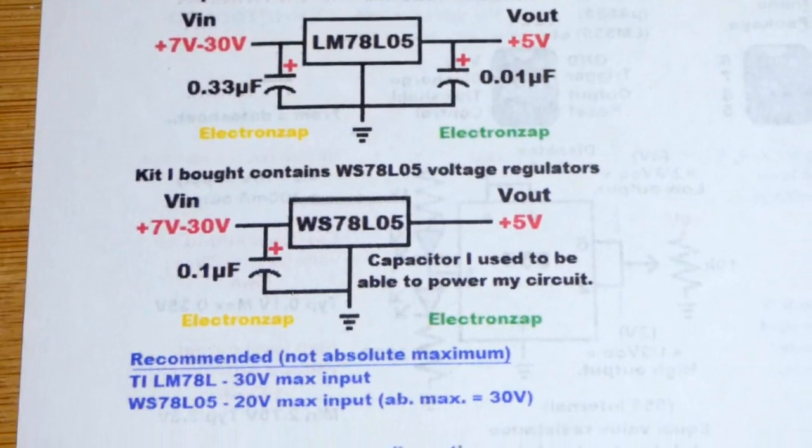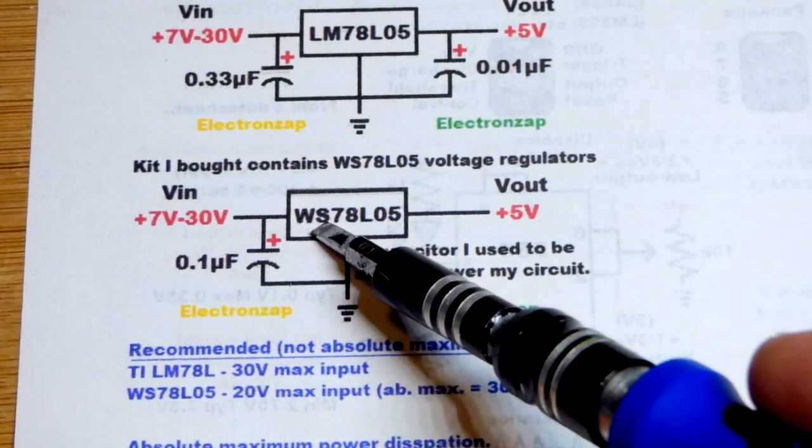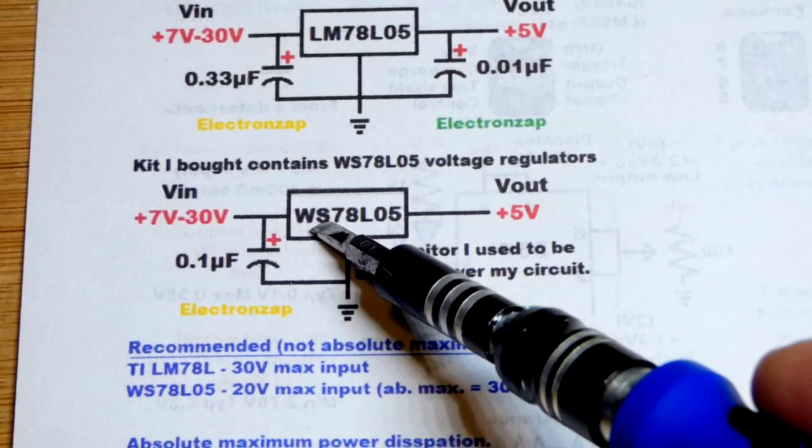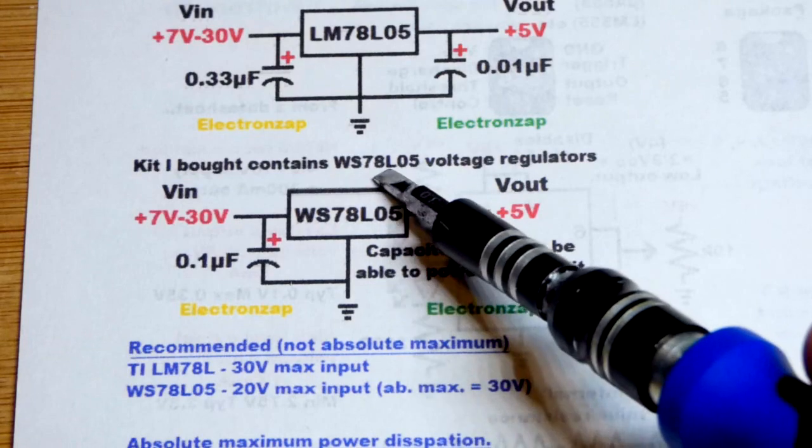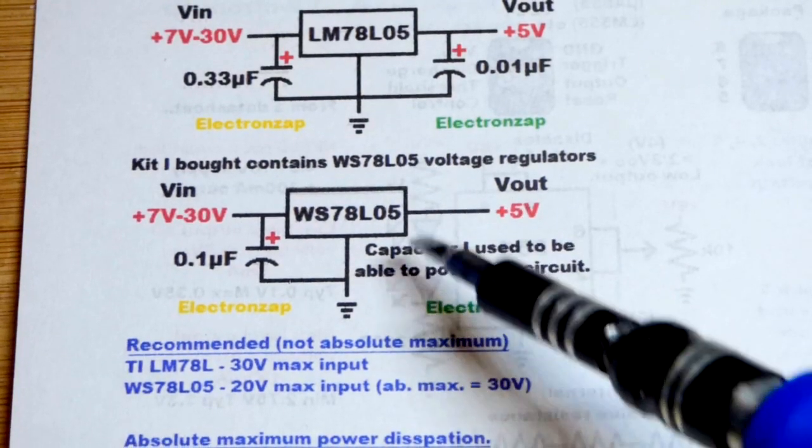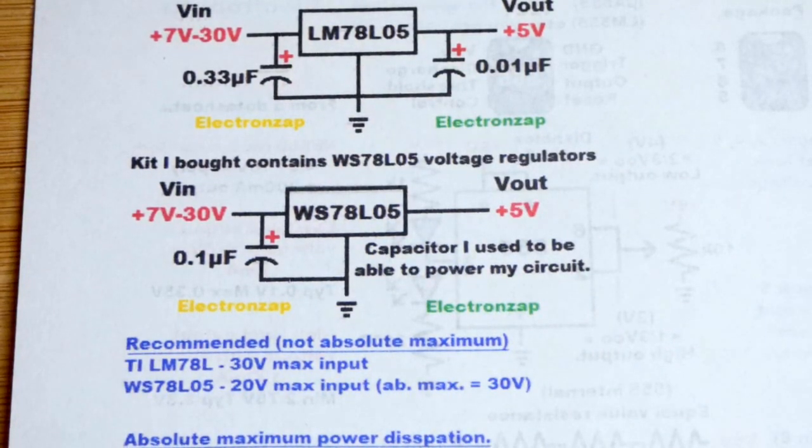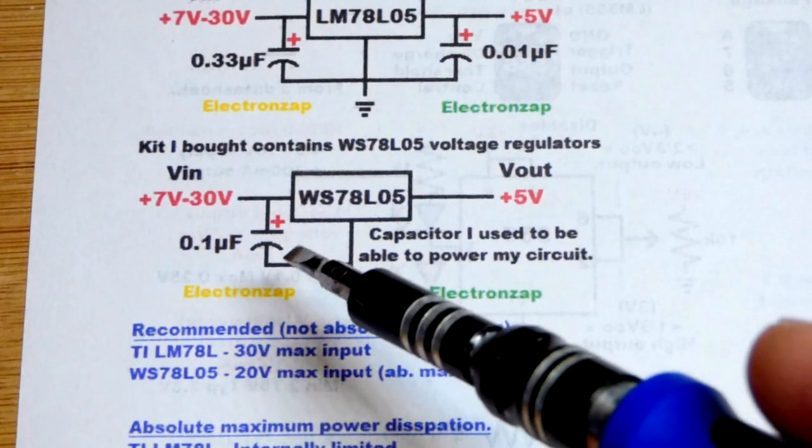The component that I have from this kit, when I looked at it closely, you could see that there was WS on there. So I found the WS78L05 data sheet, and it doesn't show the capacitors on the data sheet, but I'm not going to use them anyways. I do need, though,